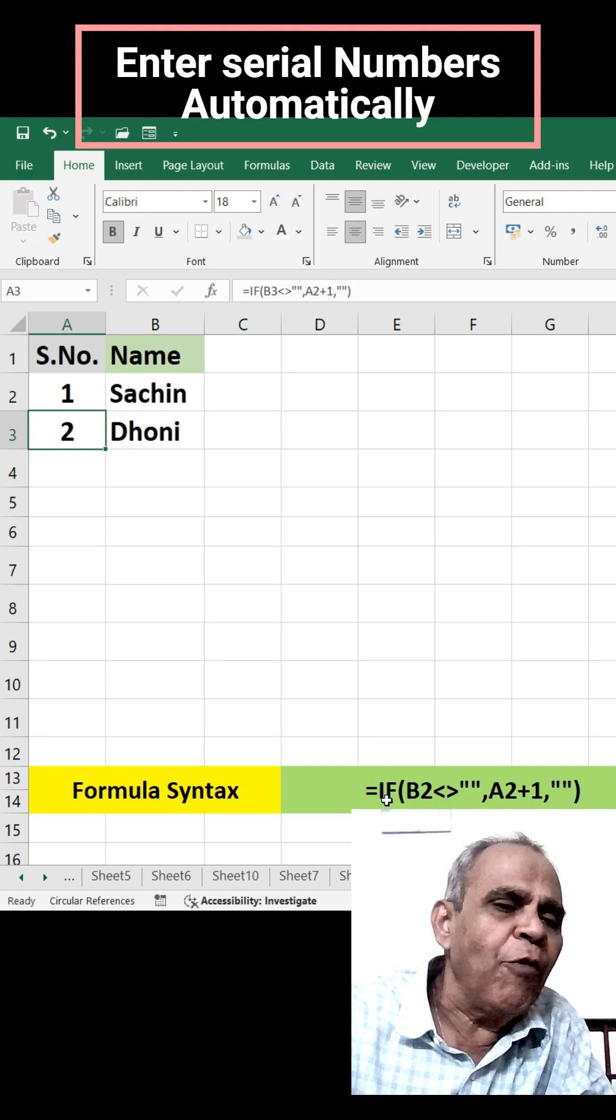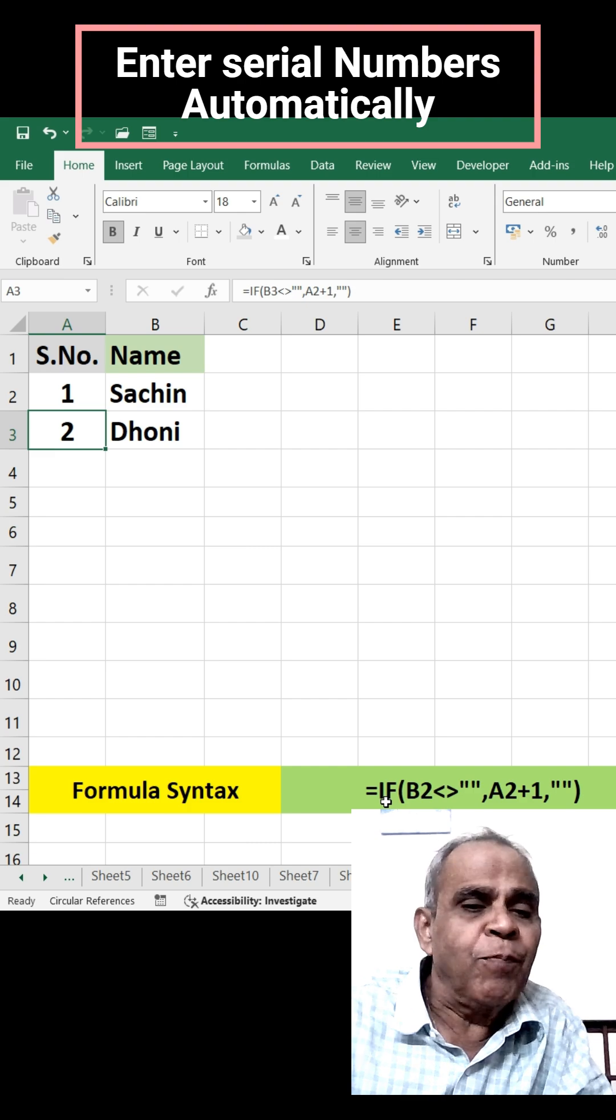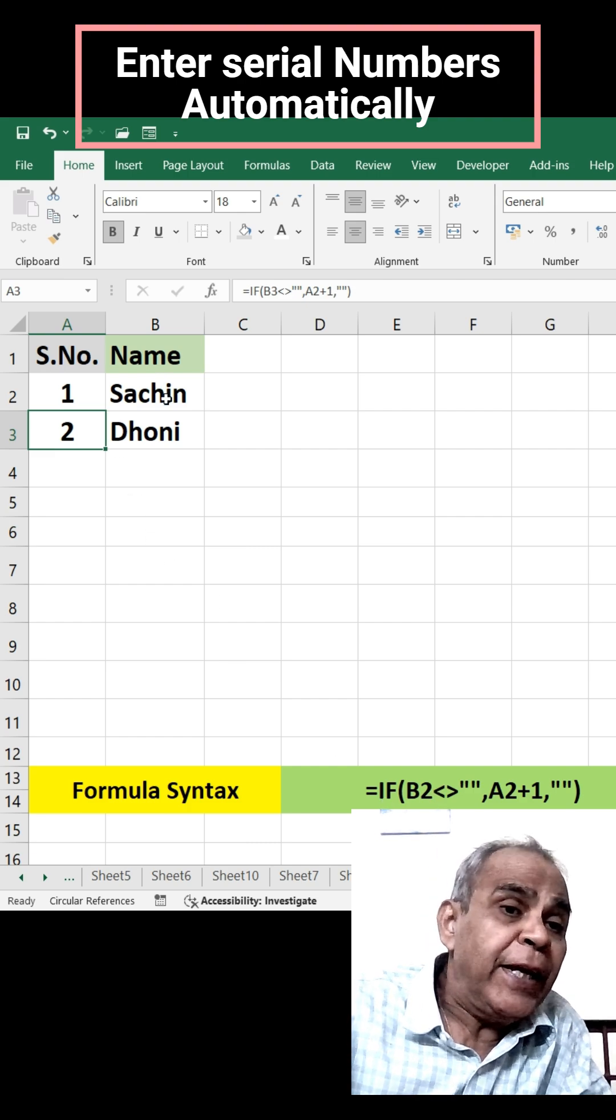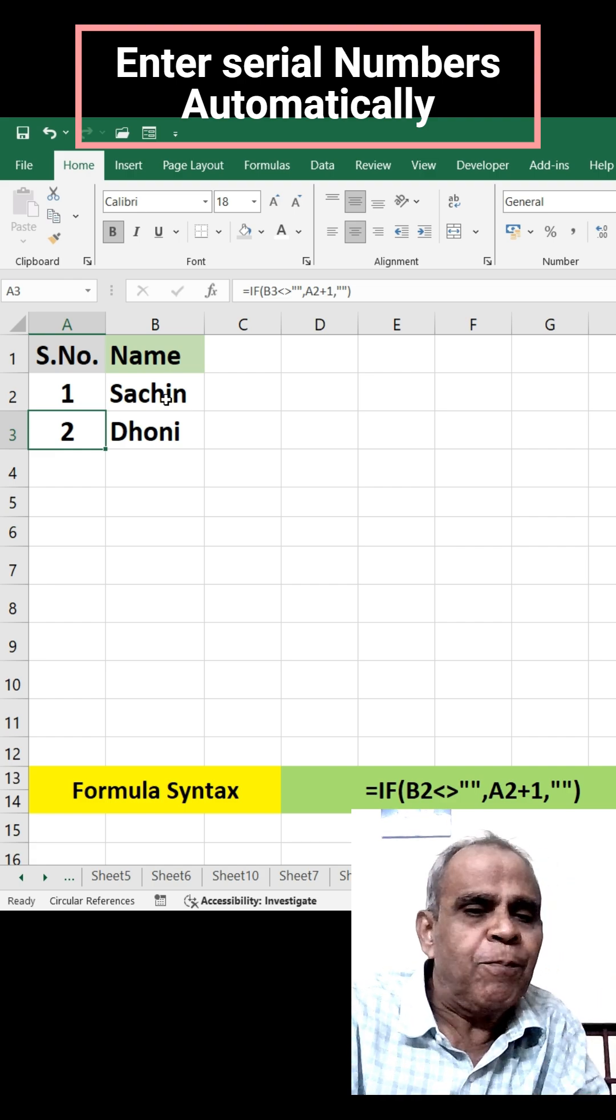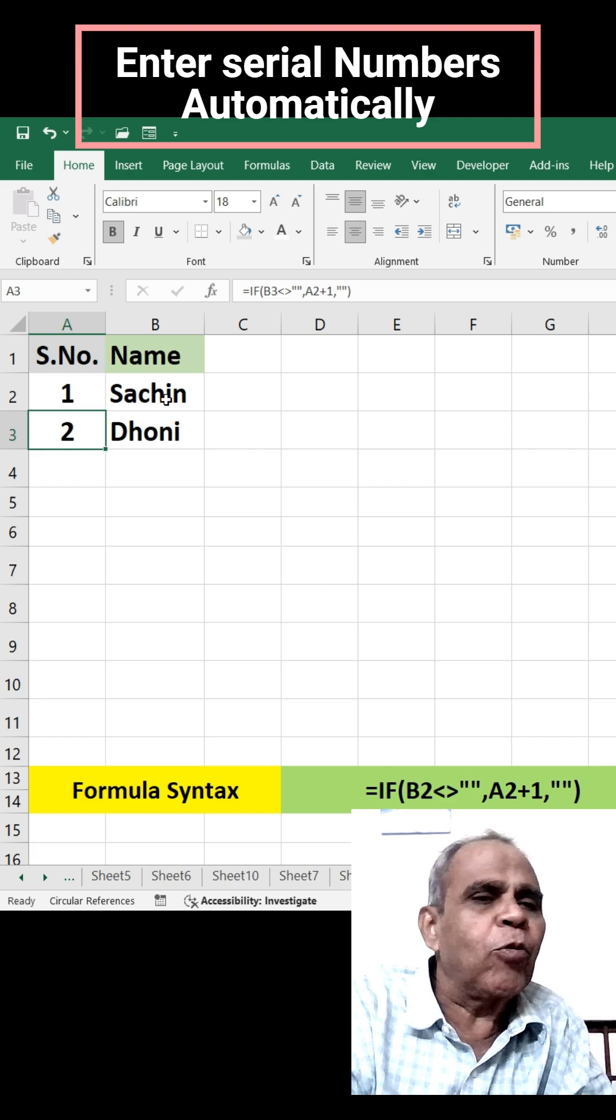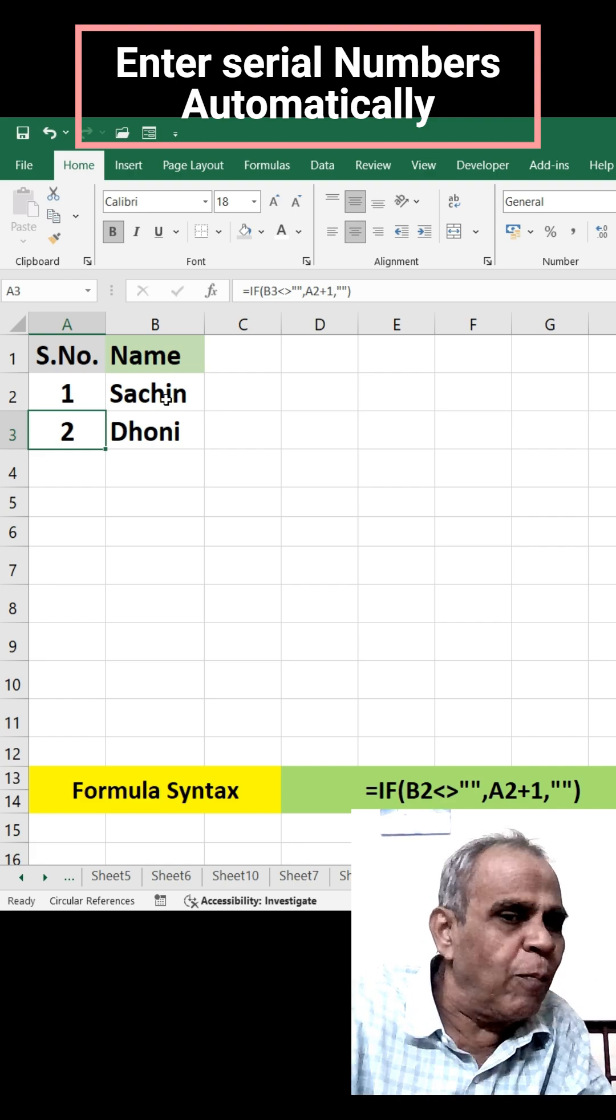Equal to IF - it is a conditional formula. B2, B2 means here. If this cell is blank, then A3 will also be blank. And if it is not blank,